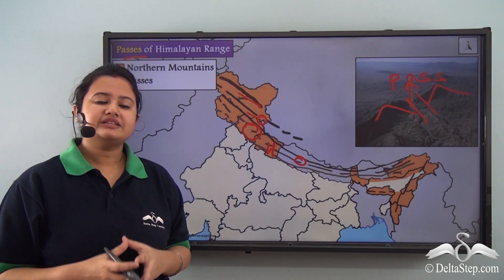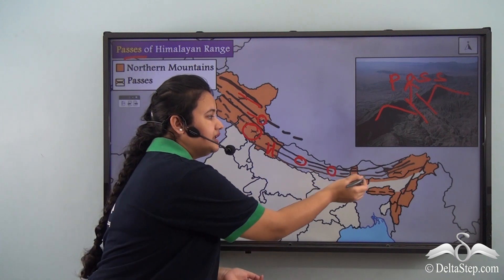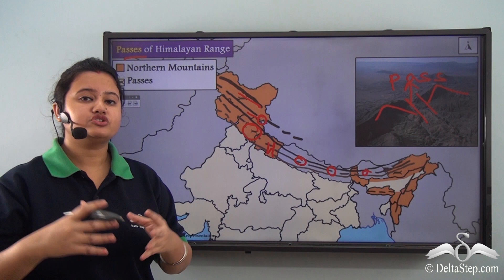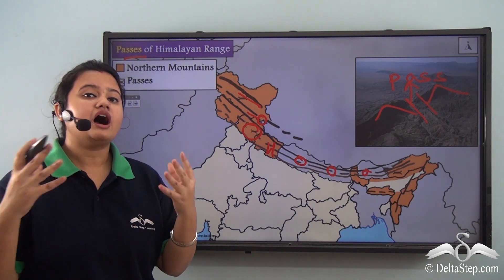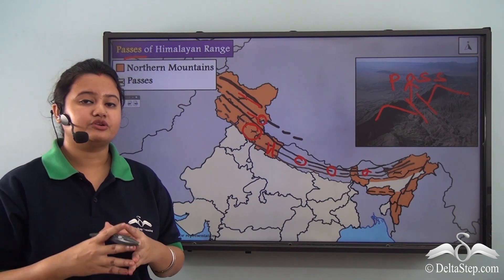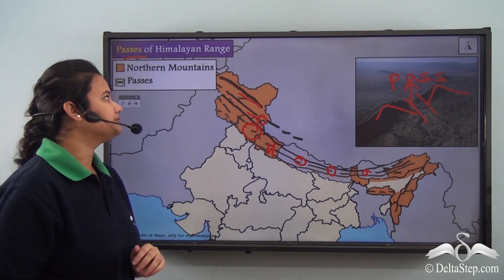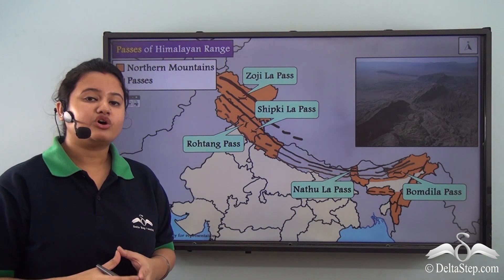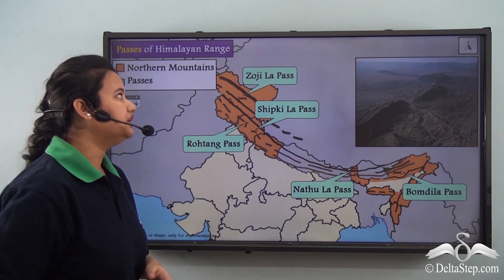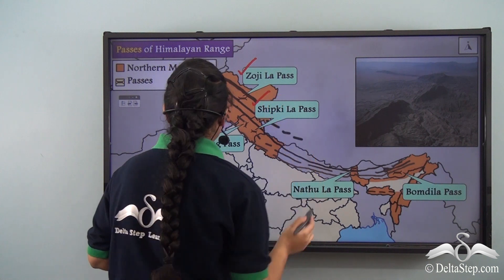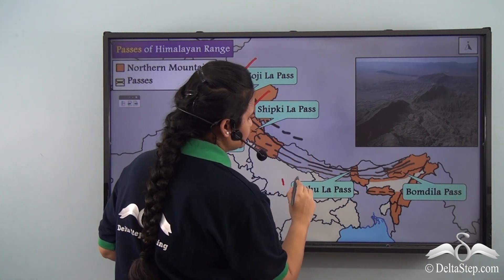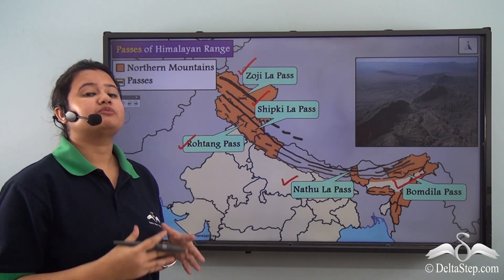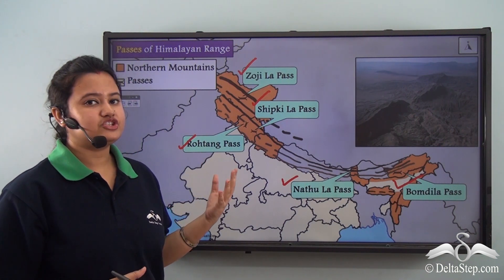Due to the presence of these passes in the Himalayan region, the Himalayas have played an important role in the exchange of art, science and culture between India and the rest of the world. Some of the important passes of the Himalayan region are Zojila Pass, Shipkila Pass, Rohtang Pass, Nathu La Pass and Bomdila Pass.